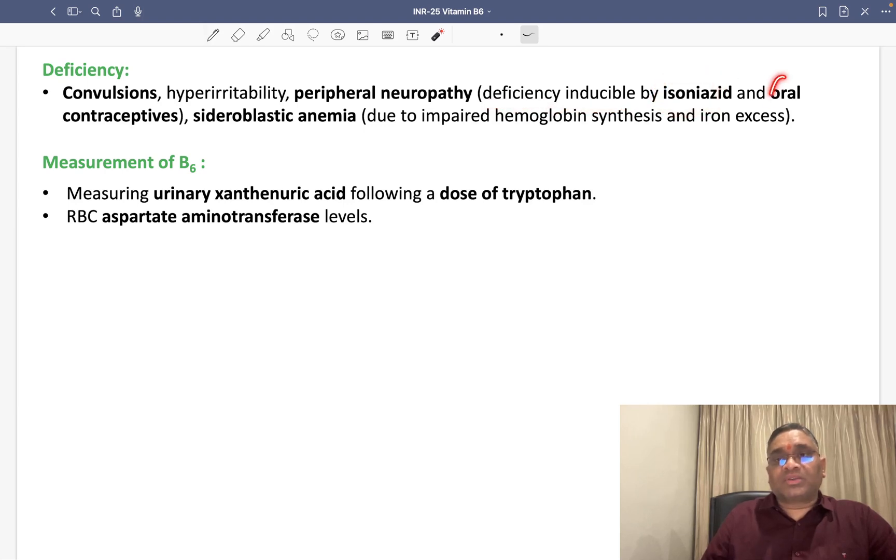Remember, this peripheral neuropathy can be induced by some drugs like isoniazid and oral contraceptives. As I have said earlier, Vitamin B6 is required for heme synthesis. So whenever there is less Vitamin B6, impaired hemoglobin synthesis and iron will be in excess and they will be causing which anemia? Sideroblastic anemia.